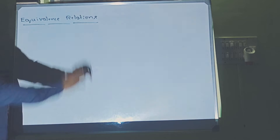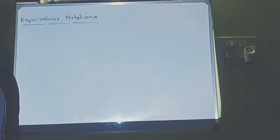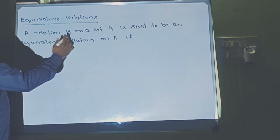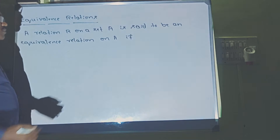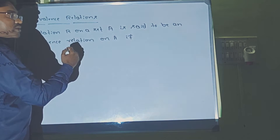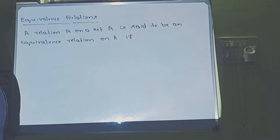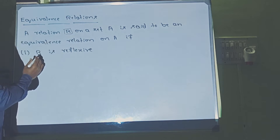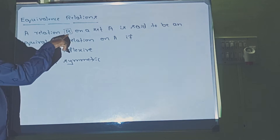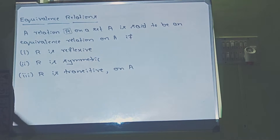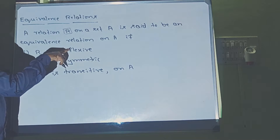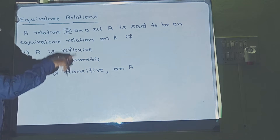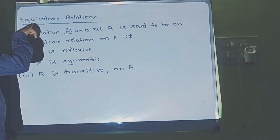Let us see what is the equivalence relation. A relation R on a set A is said to be an equivalence relation on A if R is reflexive, symmetric, and transitive. A relation which satisfies all three of these conditions is called an equivalence relation.